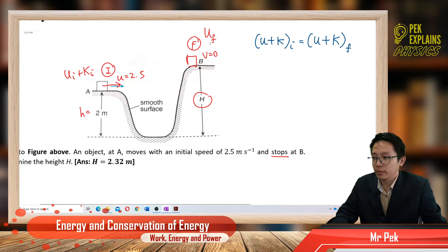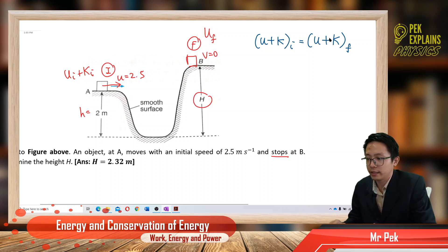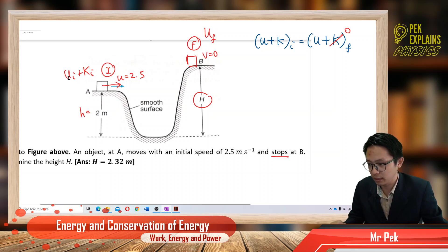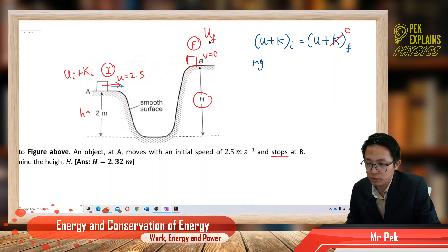So we can say that the initial total energy is equal to final total energy, only that the final kinetic energy is zero because it says it stops. So it has the initial potential, initial kinetic, and only has final potential. Then apply the formula. Potential energy is mgh, and kinetic energy is half m u squared. And finally, it has the mgH.